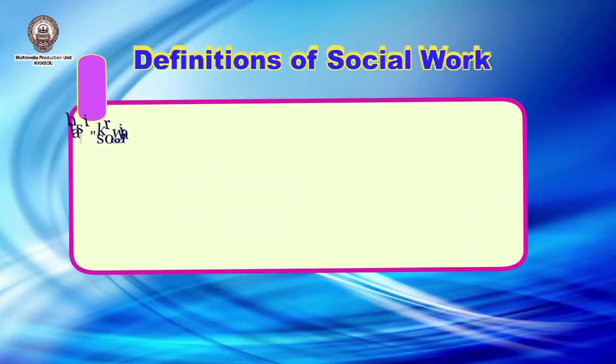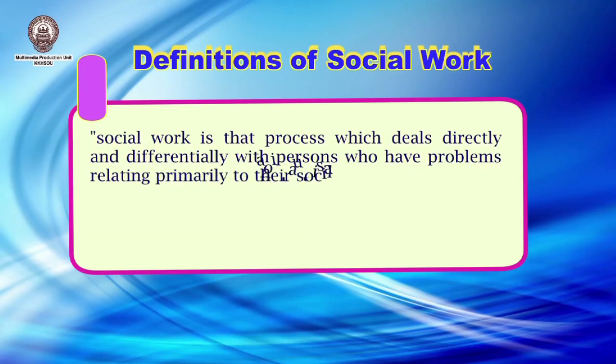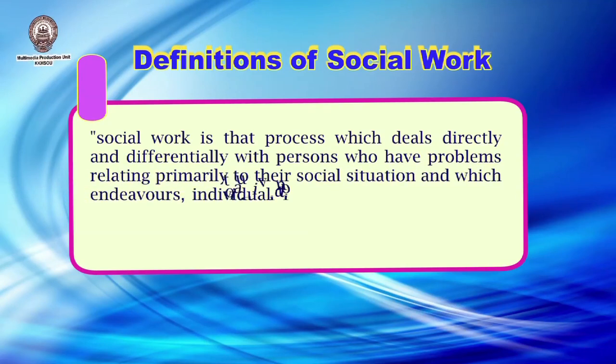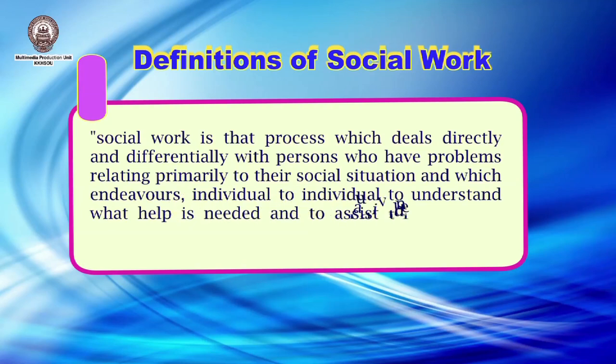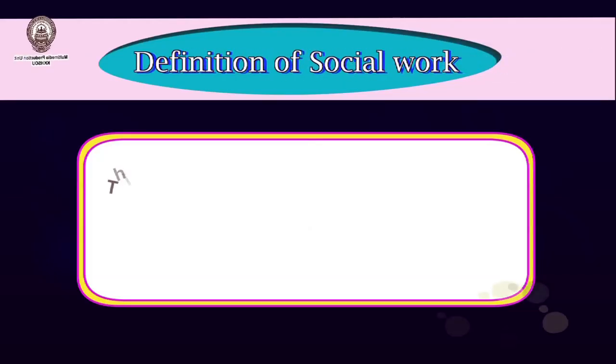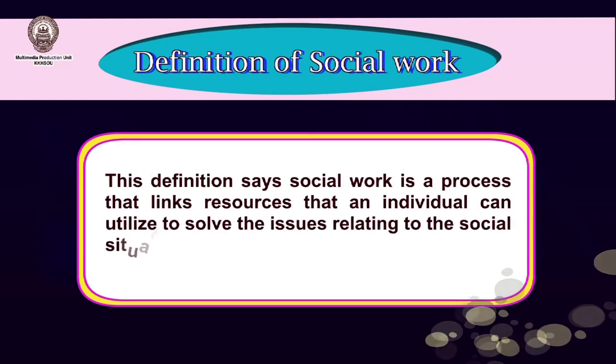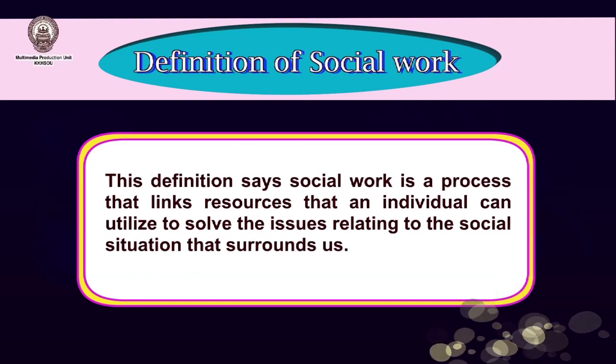Social work is a process that deals directly and differentially with persons who have problems relating primarily to their social situation, and which endeavors individual to individual to understand what help is needed and to assist the individual to find and utilize the help indicated. This definition was given by Friedlander in 1951. It says that social work is a process that links resources that an individual can utilize to solve issues relating to social situation. The role of a social worker here is to act as a resource mobilizer, ensuring that an individual is able to access resources and try to solve the problems at hand.